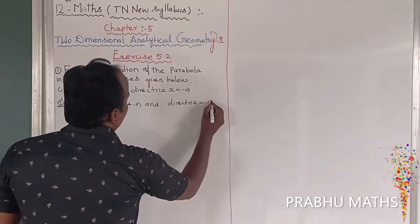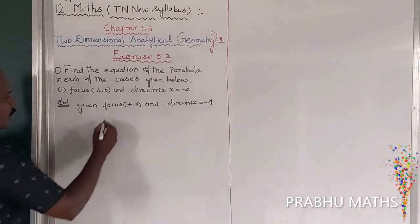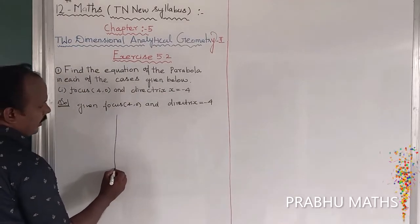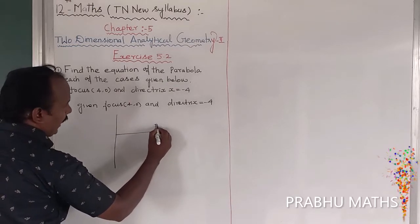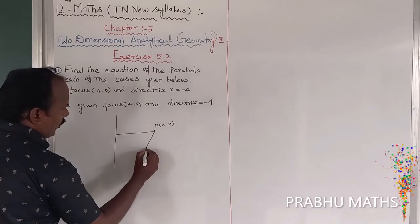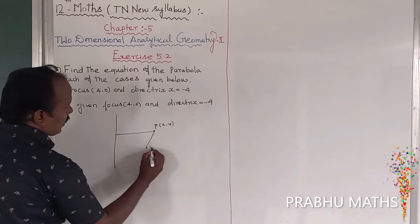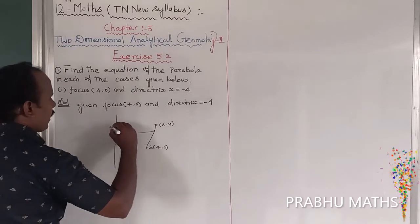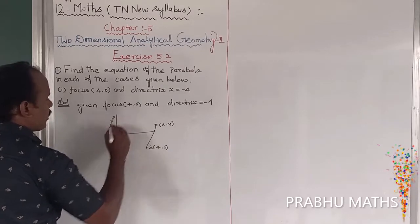The directrix equation is x = -4. This is the directrix equation. The fixed point, that is the focus, is S(4, 0), and the directrix equation is x + 4 = 0.